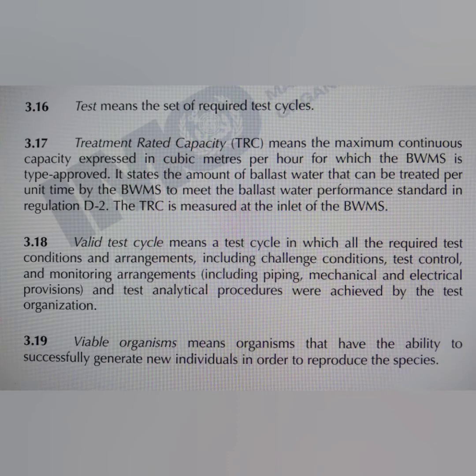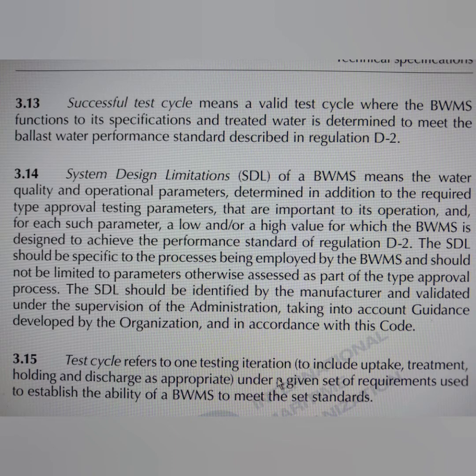I will now quickly discuss two definitions which may be important. System design limitation means the water quality and operational parameters determined in addition to the required type approval testing parameters that are important to its operation, and for each such parameter a low and/or high value for which the ballast water management system is designed to achieve the performance standard of regulation D2. Basically, in addition to what is required by D2, there are additional features, and all those features must have low and high value parameters provided by the manufacturer and identified under the supervision of the administration.